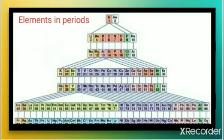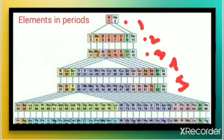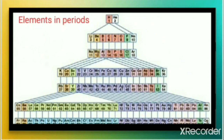The 2nd period contains 8 elements: lithium, beryllium, boron, carbon, nitrogen, oxygen, fluorine, neon. The 3rd period also contains 8 elements. The 4th and 5th periods have 18 elements, and the 6th and 7th periods have 32 elements. The number of elements in each period depends upon the value of the outermost shell, that is the value of n. Now let us discuss the electronic configuration of elements in groups — why a particular element is in a particular group.